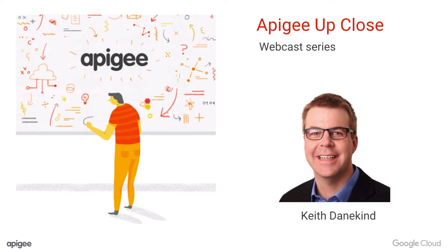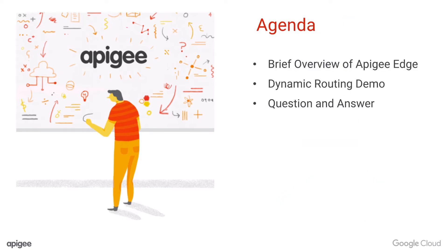A few people have asked me about how to do dynamic routing in Apigee Edge, so I'll cover that under security and extensibility. Feel free to enter questions and I will answer them at the end. The agenda for today: a brief overview of Apigee Edge, we're going to look at just the basics of how it works, then I'm going to go into the demo on dynamic routing, and then we'll do question and answer at the end.